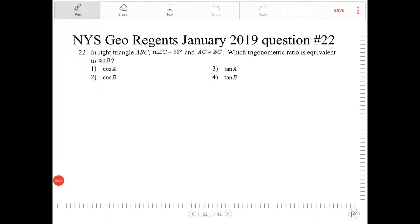In right triangle ABC, angle C is 90 degrees, AC is not equal to BC. Which trigonometric ratio is equivalent?